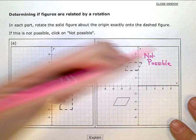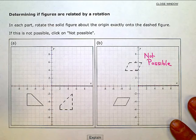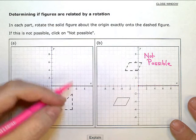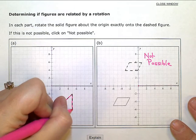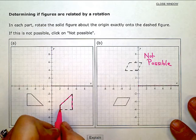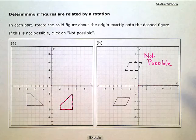This one actually would align, and you could rotate that to make your solid and dashed figure align. So I would have rotated that one and then left it. This one I marked not possible.